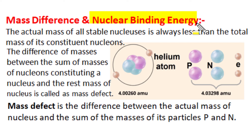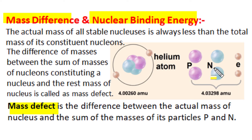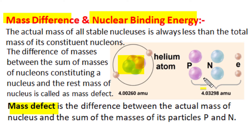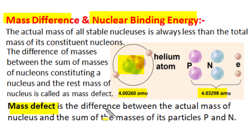The magic of nuclear binding energy lies in mass difference or mass defect. The actual mass of all stable nuclei is always less than the total mass of its constituent nucleons — all its protons and all its neutrons. The difference between the sum total mass of Z protons and A minus Z neutrons and the rest mass of the nucleus is called mass defect. For helium, the sum total mass of 2 protons and 2 neutrons is 4.03298 AMU, and the mass of helium nucleus is 4.00260 AMU — their difference is the mass defect.